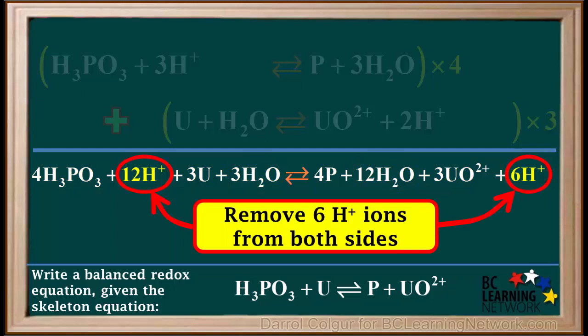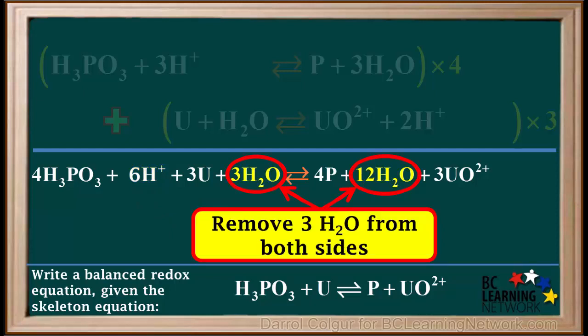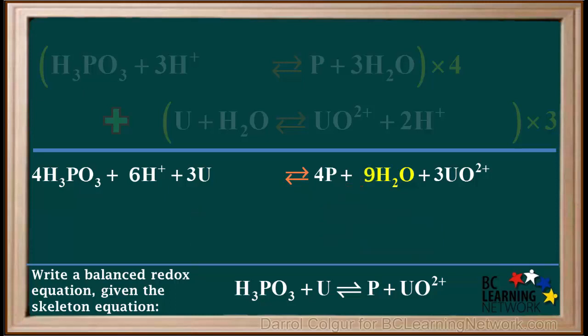We'll simplify H-plus by removing 6H-plus ions from both sides. Removing 6H-plus ions from the right side leaves us with none. And removing 6H-plus ions from the left leaves us with 12 minus 6, which equals 6H-plus ions. To simplify water, we can remove 3 water molecules from both sides. Removing 3 water molecules from the left side leaves us with none. And removing 3 water molecules from the right side leaves us with 12 minus 3 equals 9 water molecules.